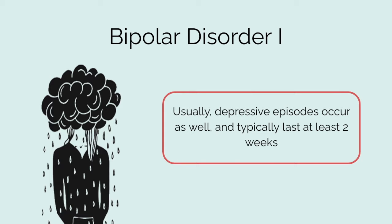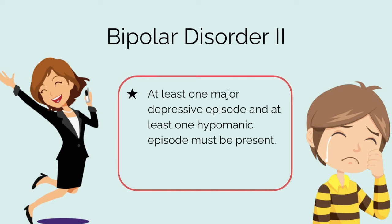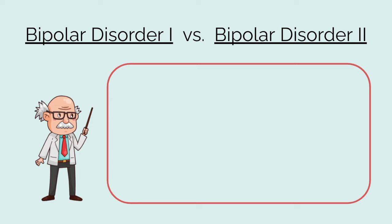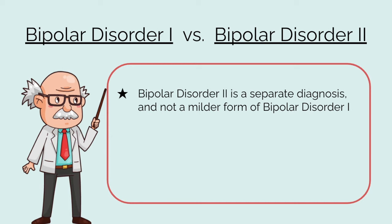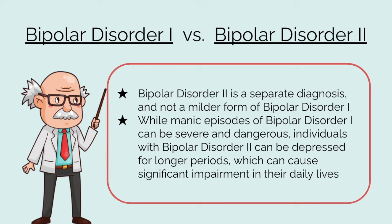In Bipolar disorder 2, at least one major depressive episode and at least one hypomanic episode must be present. In order to be placed into this type, the individual must never have had a manic episode. Bipolar disorder 2 is not a milder form of Bipolar disorder 1, but is in fact a separate diagnosis. While manic episodes of Bipolar disorder 1 can be severe and dangerous, individuals with Bipolar disorder 2 can be depressed for longer periods, which can cause significant impairment in their daily lives.